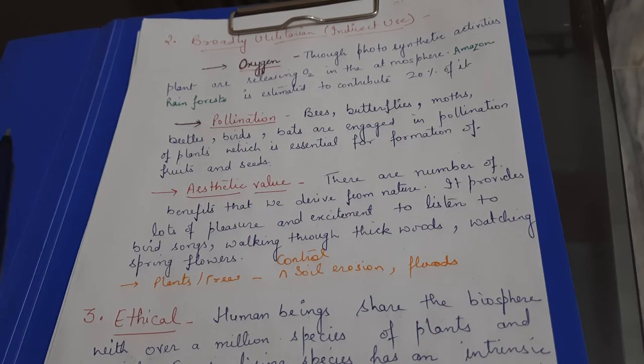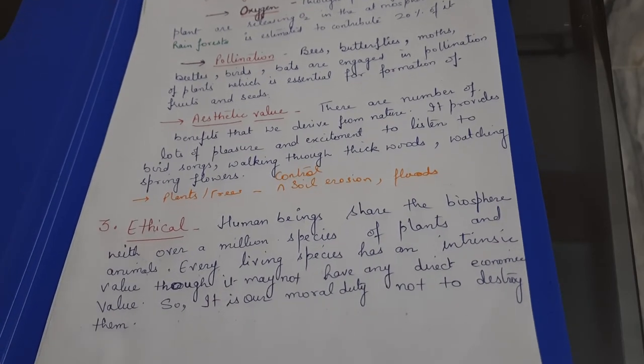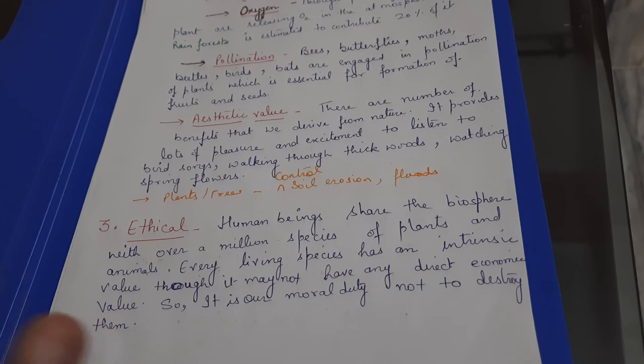Next category, last category, ethical. Ethical, which is called the Earth, which are human beings. They have all the animals, birds and plants. So millions of species are living on Earth. Earth is not only ours. Even they have equal rights.